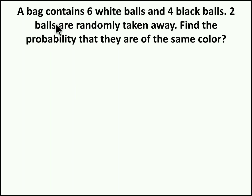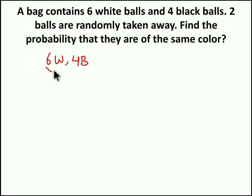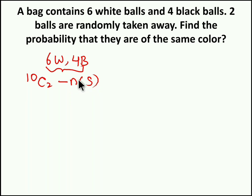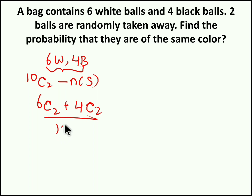This is our second question. A bag contains 6 white balls and 4 black balls. 2 balls are randomly taken. Find the probability that they are of the same colour. Totally we have 10 balls, from which we choose 2, so 10C2 is our total sample space. What we exactly need is 2 balls of the same colour — either 2 white (6C2) or 2 black (4C2). So the numerator is 6C2 + 4C2.